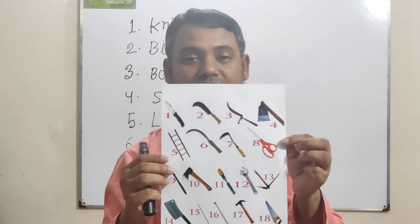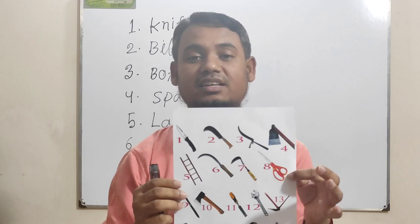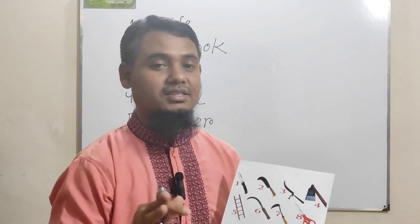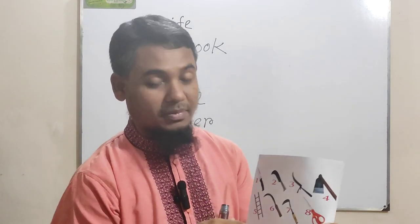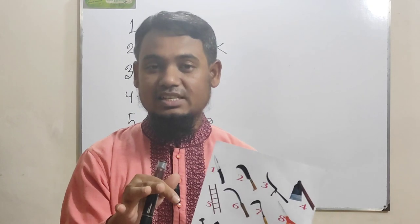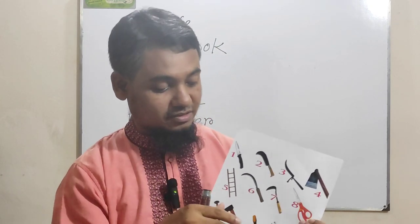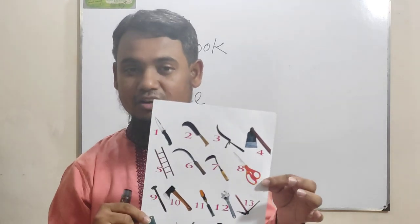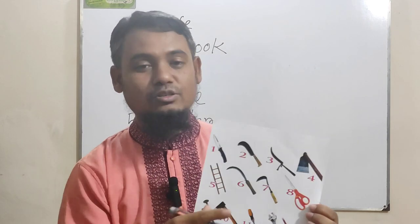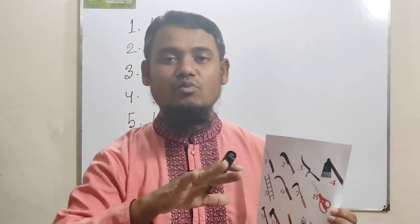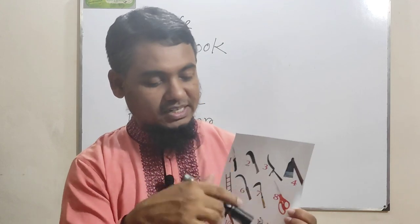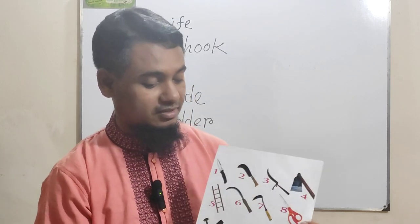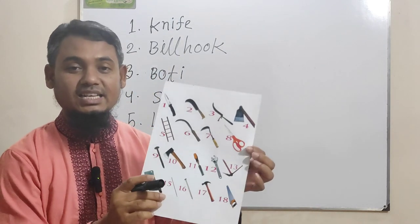Picture number eight is scissors. Scissors are used by the tailor or seamstress — seamstress is the feminine of tailor. These tools are especially used by the tailor or seamstress to cut cloth while making different dress pieces, but we can also use them to cut rope or any other small things.